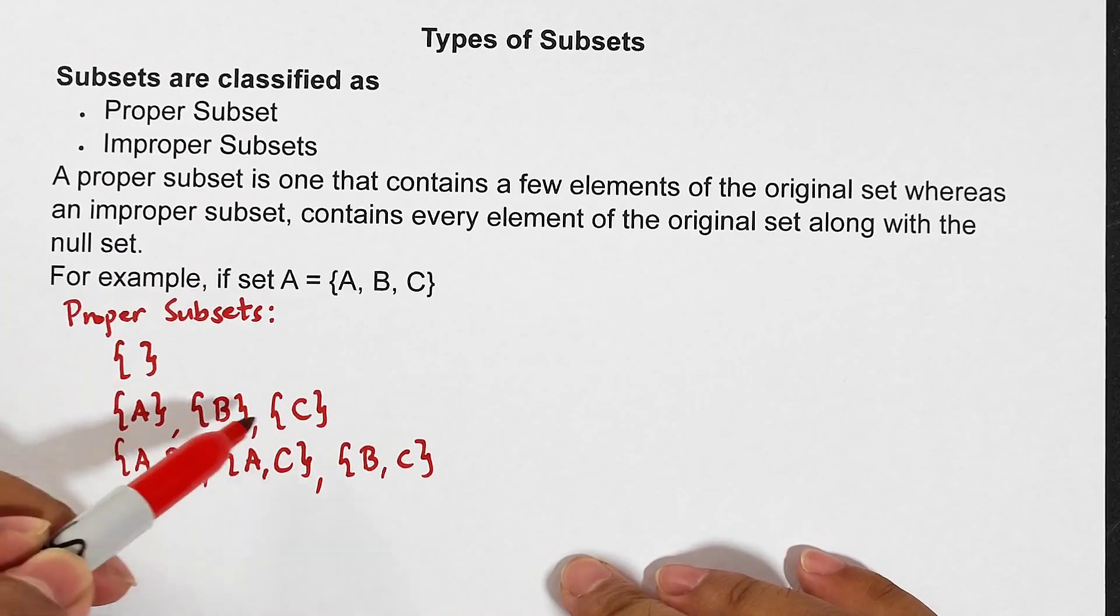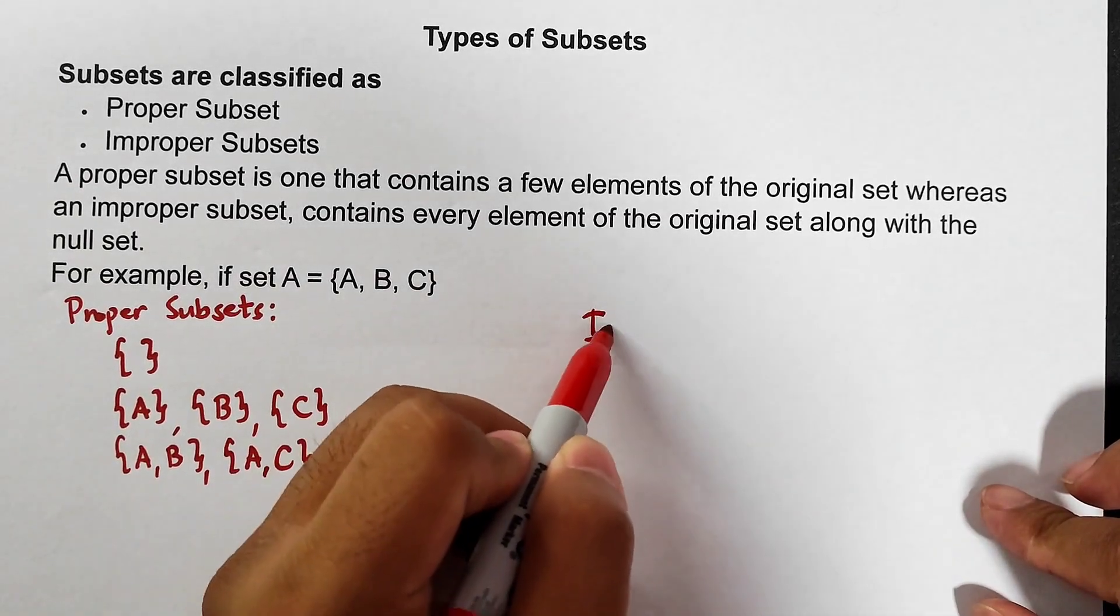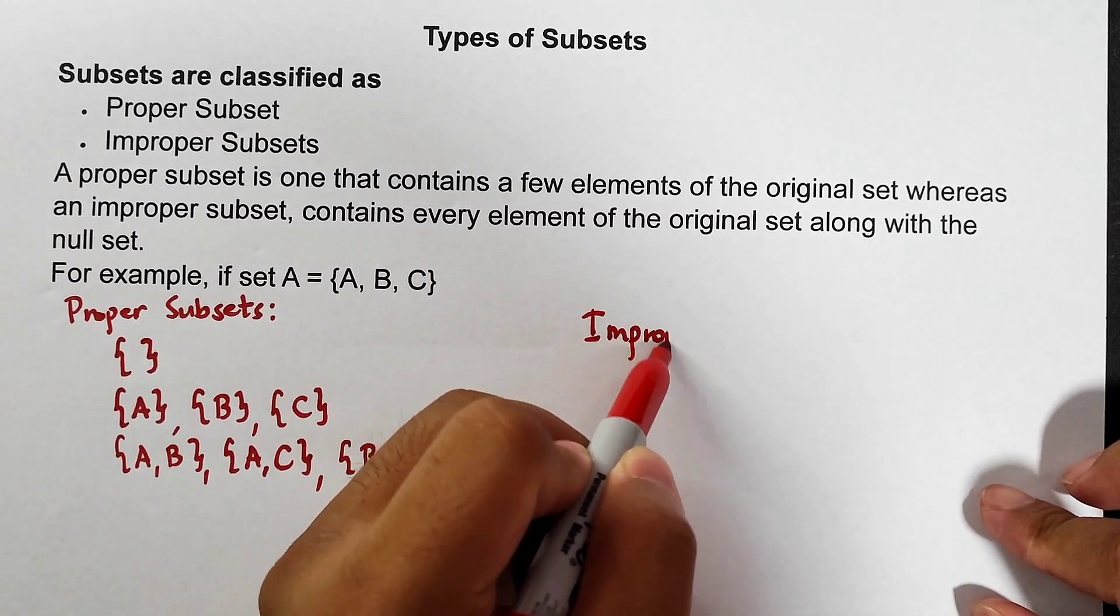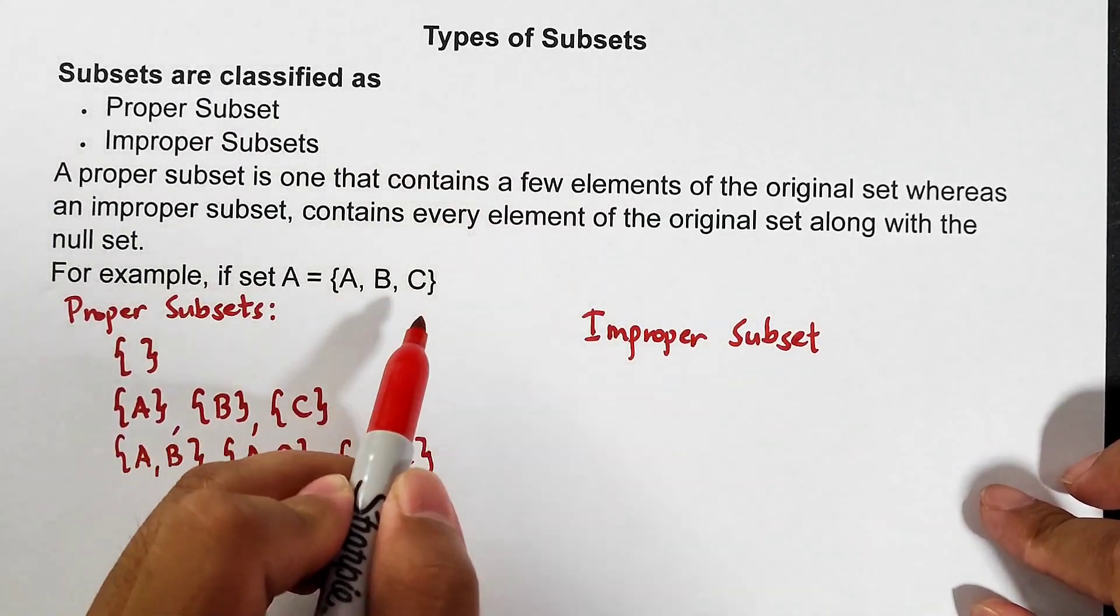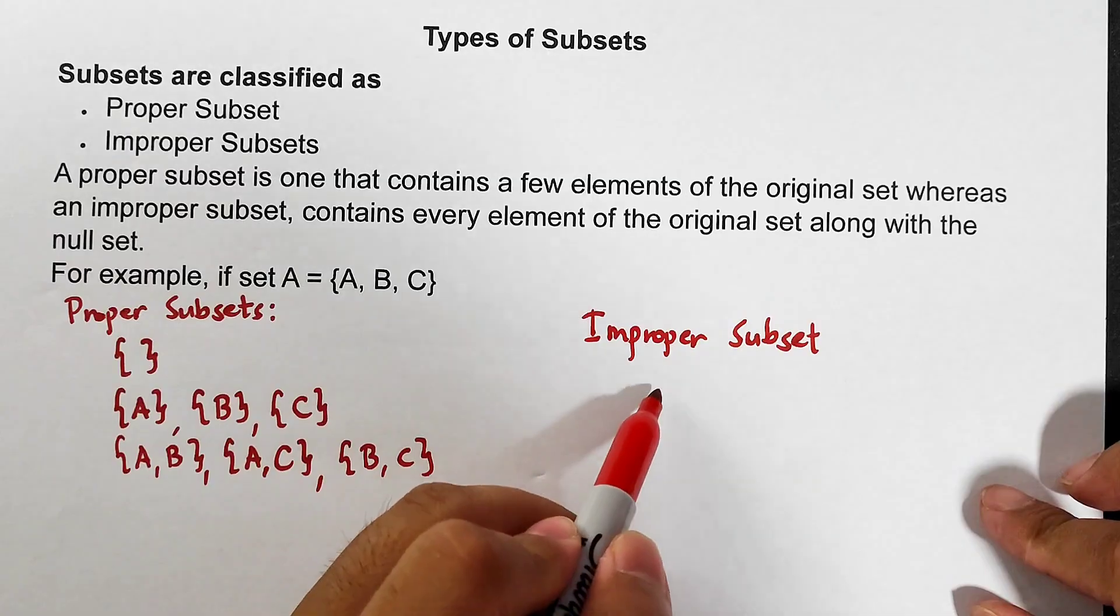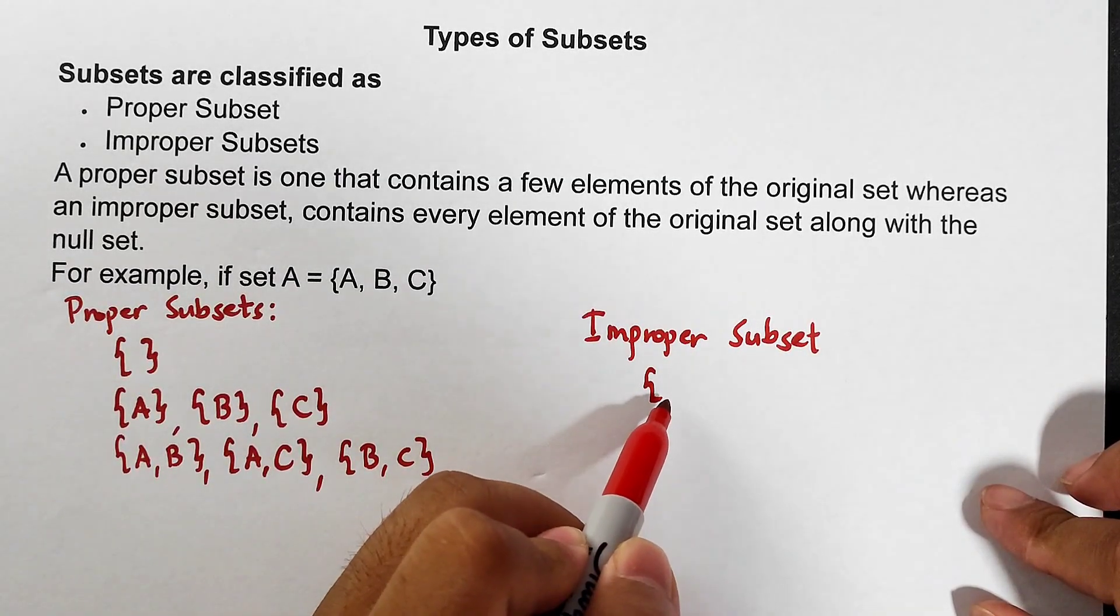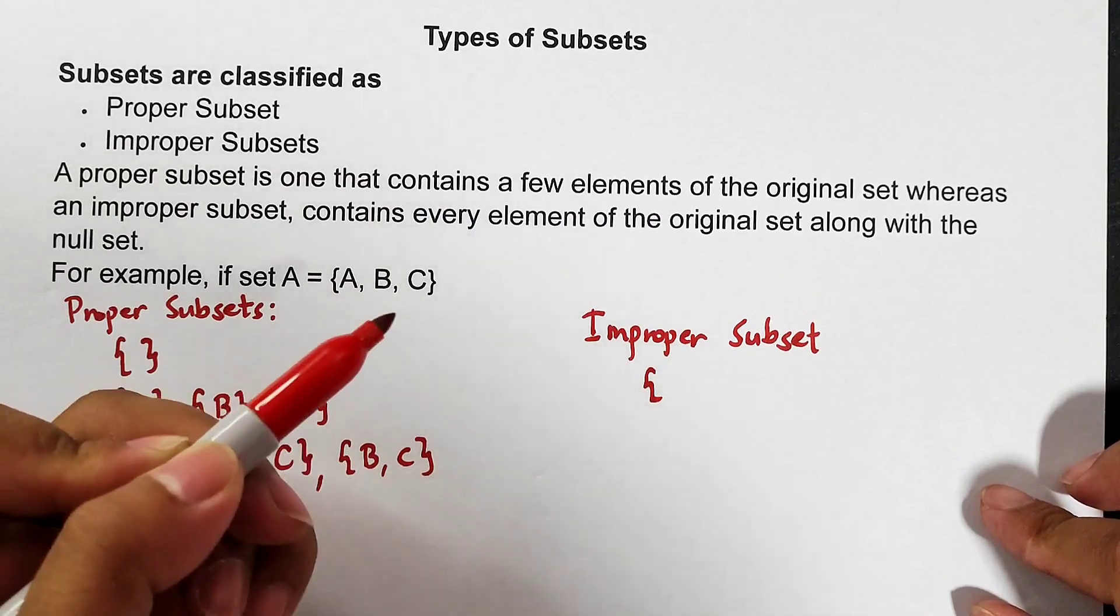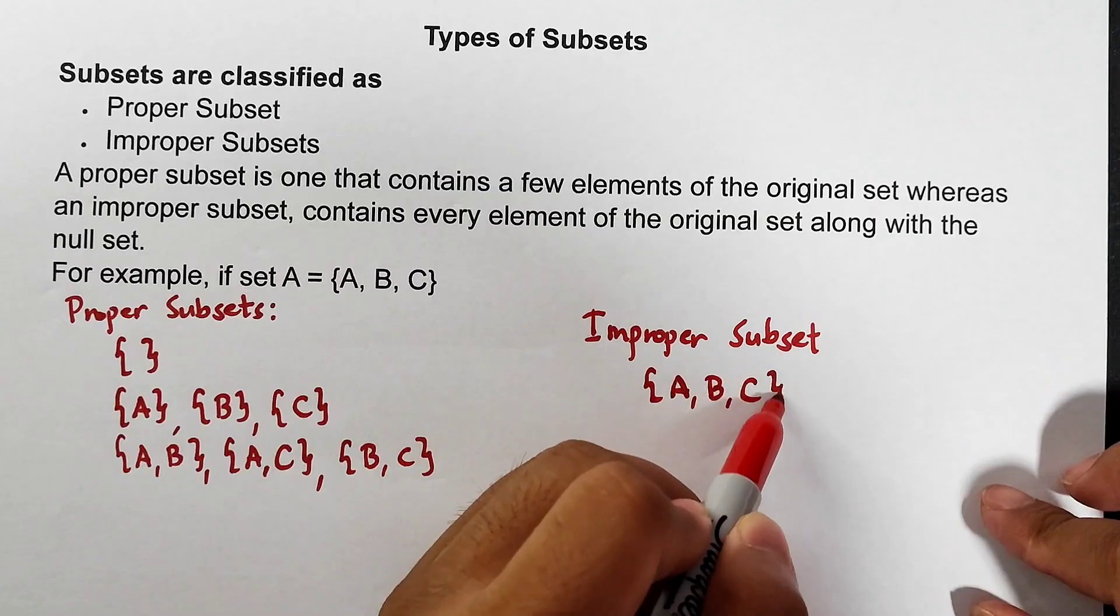Zero element, single element. Let's go to two elements. We have A comma B, then A C, then we have the last pair which is B C. Now if you notice, one, two, three, four, five, six, seven. Now we're done with two elements. The next one is three elements. This three element subset is called improper subset.